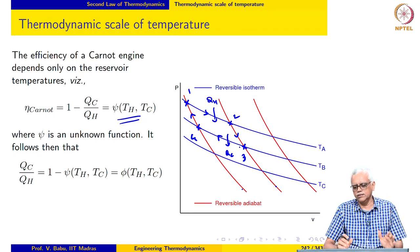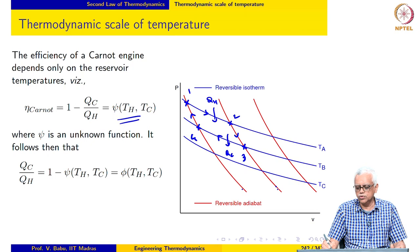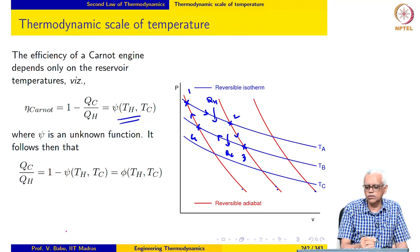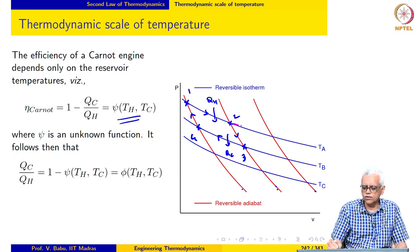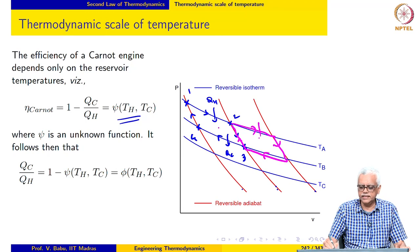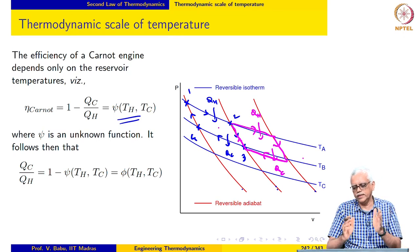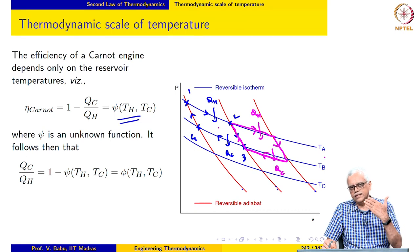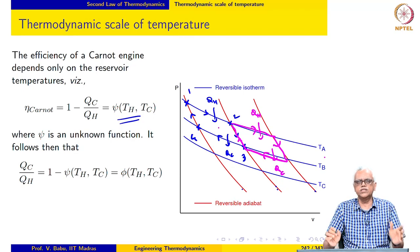You can easily imagine operating a Carnot cycle shifted between the same two reversible adiabats but between the same two isotherms. There would be no difference between the two Carnot cycles — the heat supplied will still be QH and the heat rejected will still be QC. I can slide this cycle along the isotherm and the amount of heat supplied and rejected will remain the same; only the state points will change.